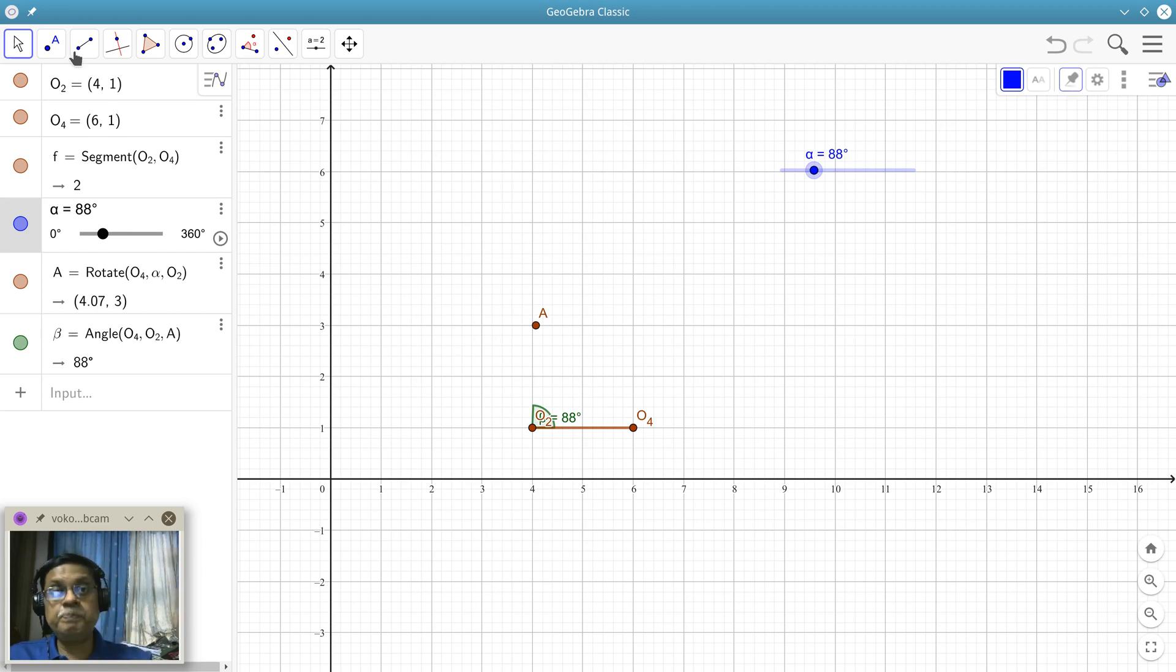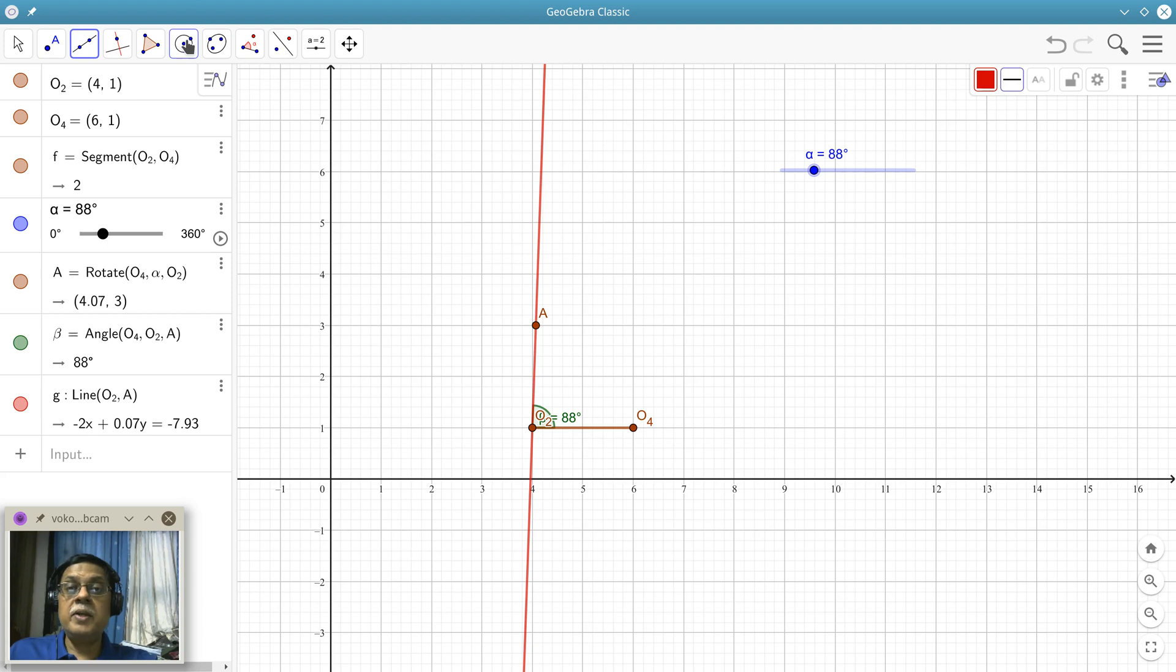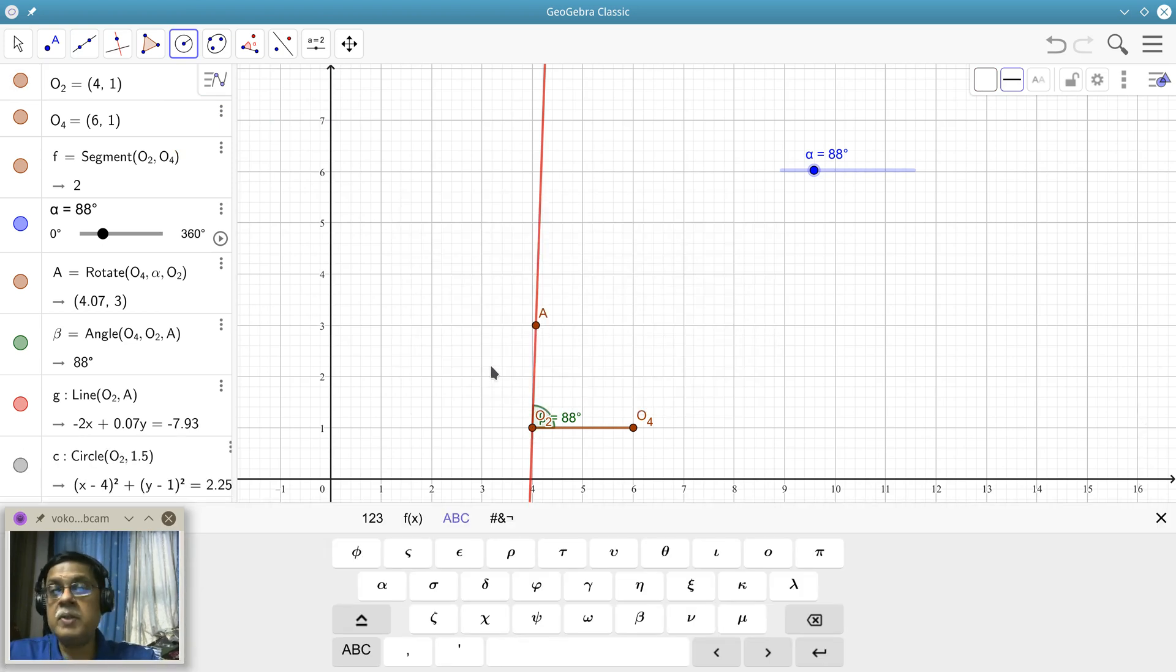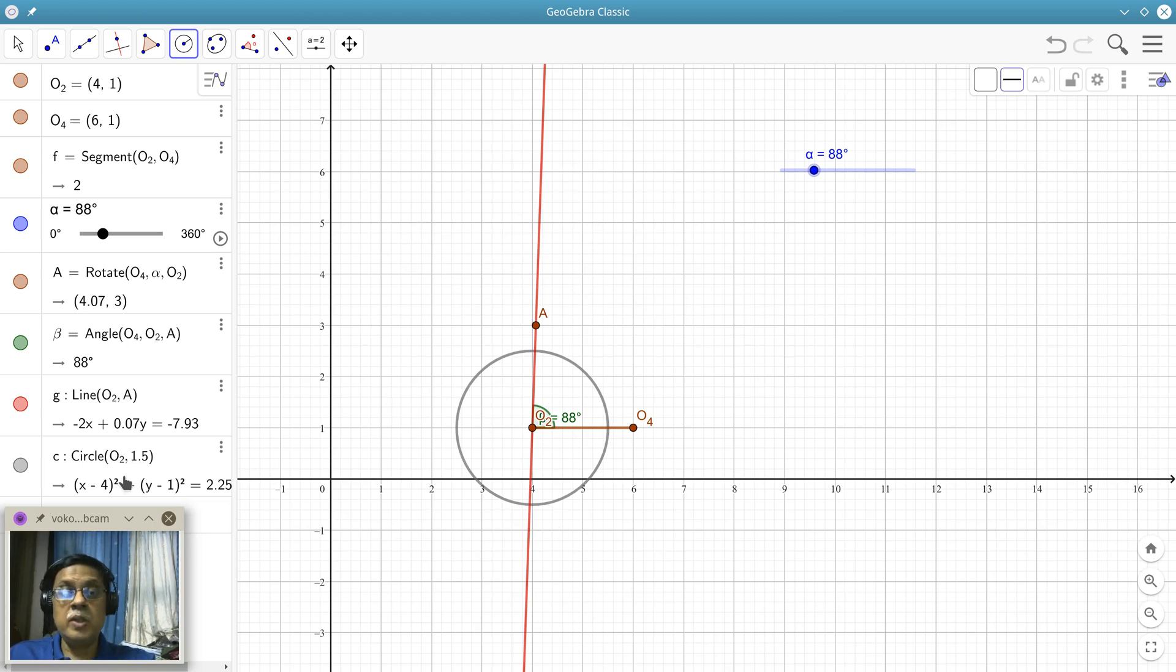What we do is we first draw a line which is passing through O2 and A. Next thing I want to decide on the crank size. I am going to decide that it is going to be 1.5 centimeters. To do that, I pick a circle command with center and radius. The center obviously is at O2 and now I specify the radius for the crank which is 1.5 centimeters. You can see a circle has been drawn with center at O2. The center is 4,1 and the radius square is 1.5 square which is 2.25.